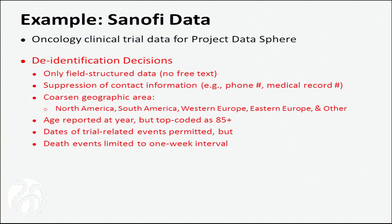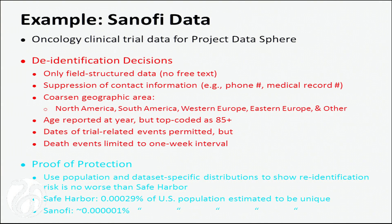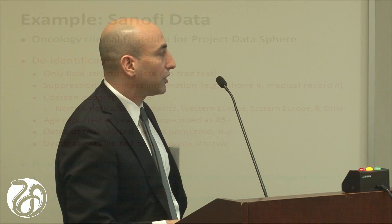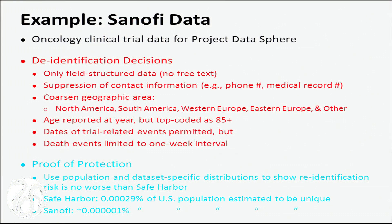Age was reported at the year level but top-coded at 85. Dates of trial-related events were permitted in the data set, but death-related events were limited to one-week intervals. The statistical protection analysis used population statistics and sampling statistics. We looked at identifiability under a safe harbor model, set a threshold, examined combinations of factors, and showed that identifiability in this data set was much lower than what safe harbor alone would produce for the U.S. population.